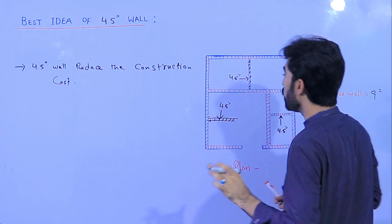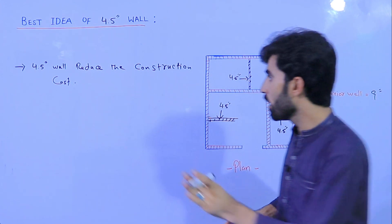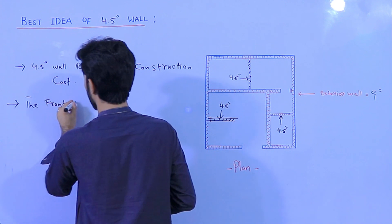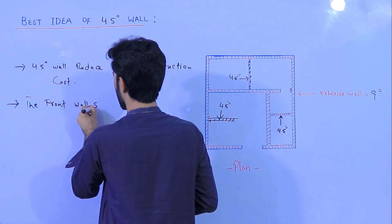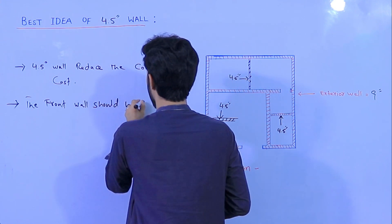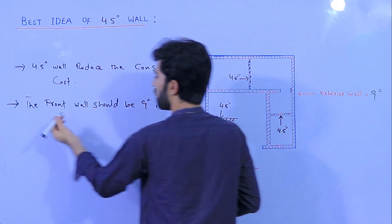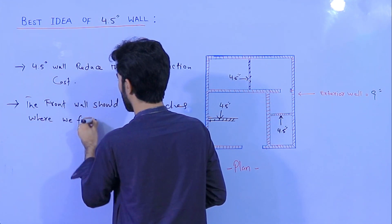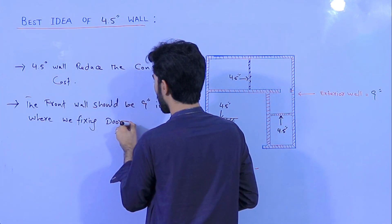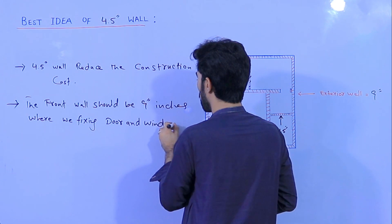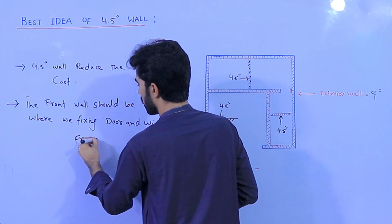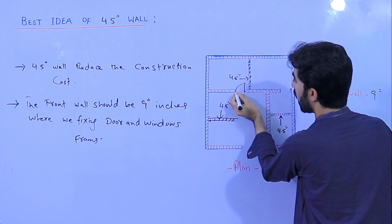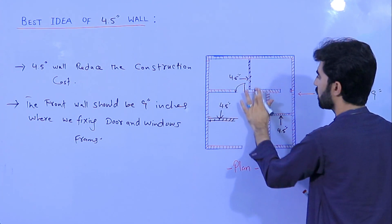As you can see, this is the partition wall, so this is 4.5 inch. But this is the front wall where we are fixing the door and windows. The front wall should be 9 inches because we are fixing door and window frames there.